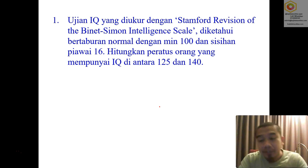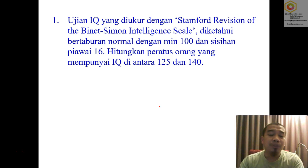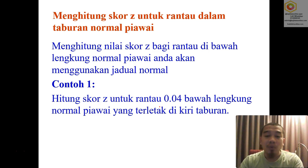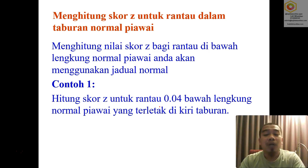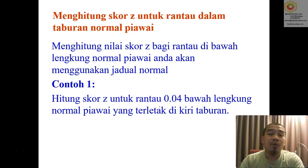Here is an example using IQ data. The mean is 100 and the standard deviation is 16. We want to calculate what proportion of respondents fall within IQ scores of 125 to 140. We need to find the area under the curve using the normal tabulation table and z-scores to estimate the percentage of people with IQ between 125 and 140.